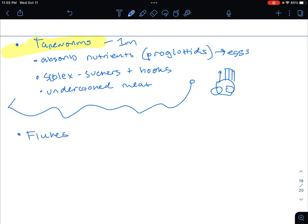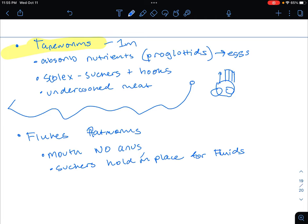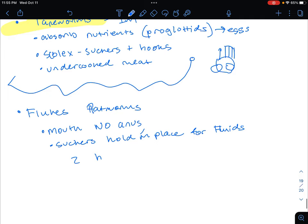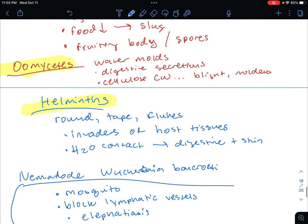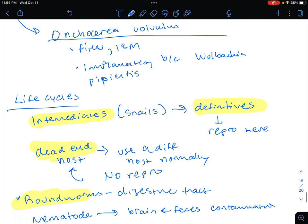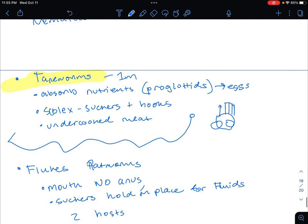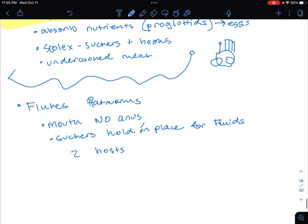Flukes are flatworms. They have a mouth and no anus. The suckers hold them in place, and they love drinking fluids. There's going to be two hosts. We talked about the snail and the human - there's the intermediate snail and then the definitive human. Schistosomiasis is a species of the fluke.